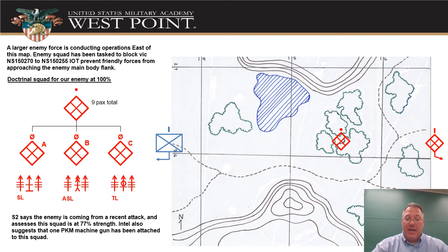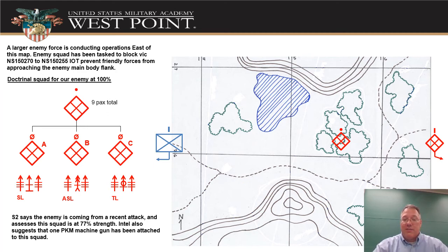Intel from the S2 says they're coming off a recent attack and this squad is at 77% strength, so you're going to have to factor in that they're not at full strength. Intel also suggests that a PCAM machine gun has been attached to this squad — consider that as an attachment to beef them up on top of their losses. Go ahead and take that information, apply what you've learned for enemy analysis, and do an enemy SITTEMP of this sector. Bring that to class on an overlay sheet.